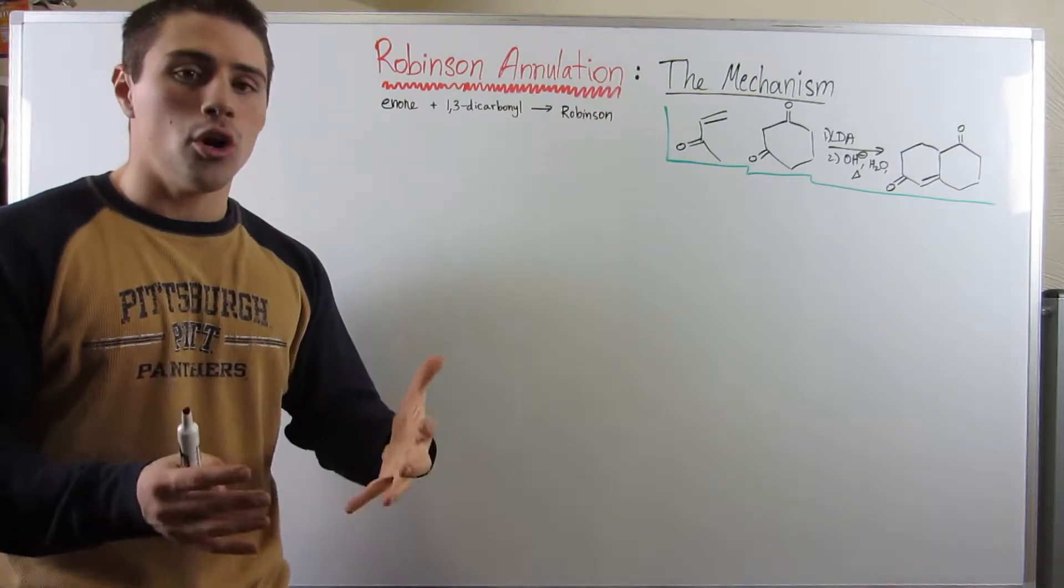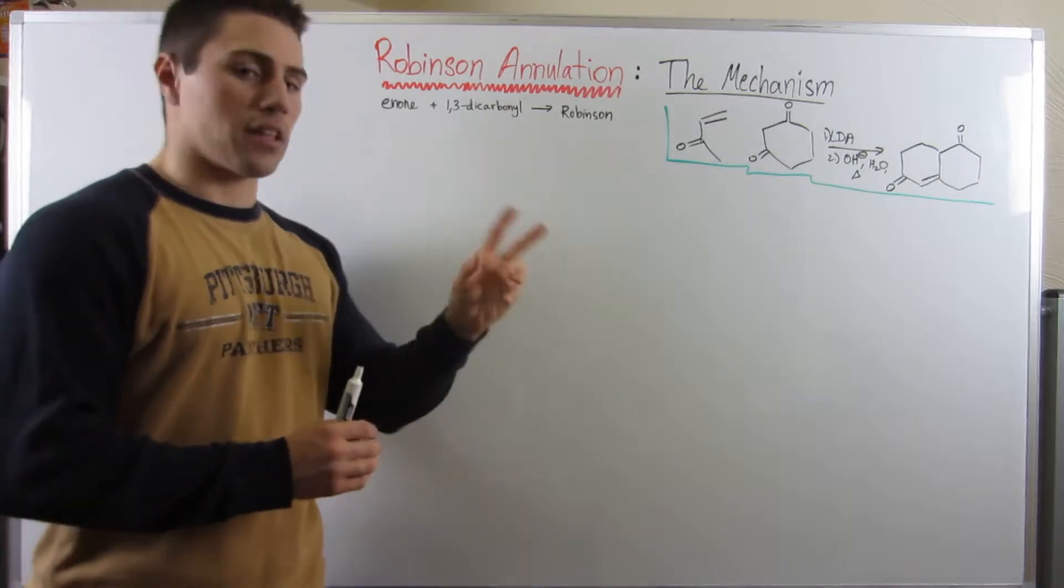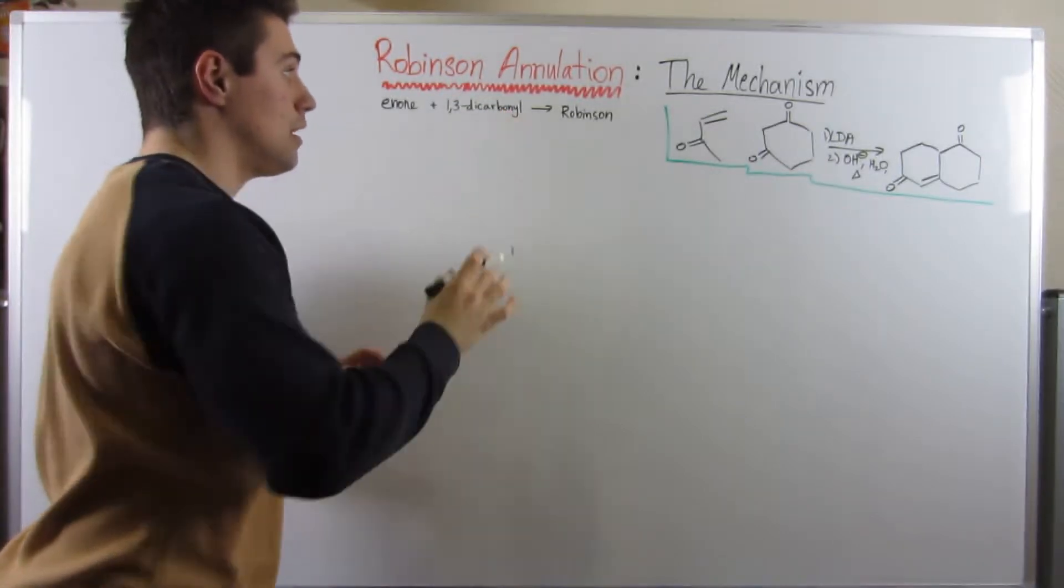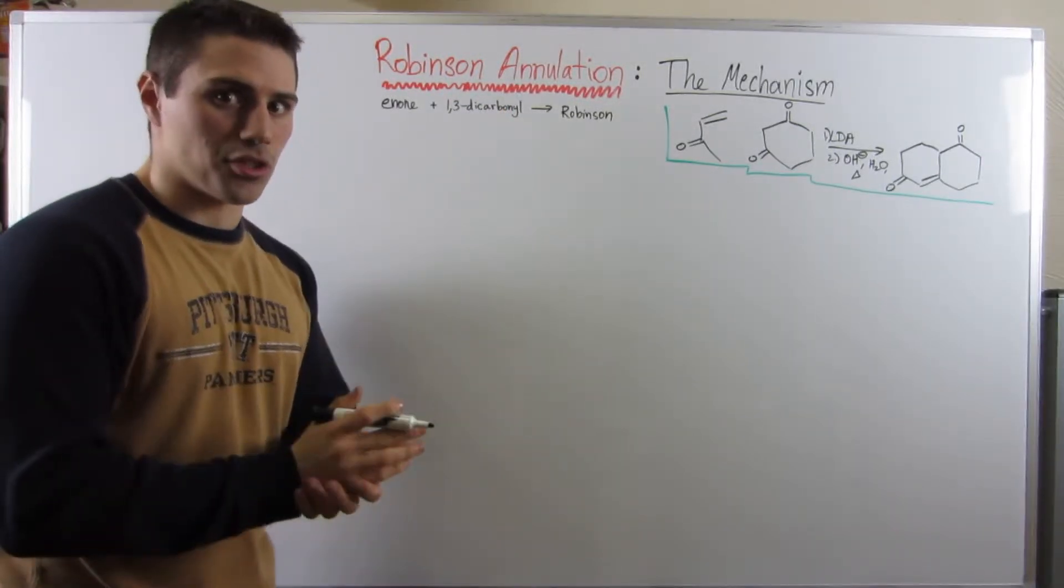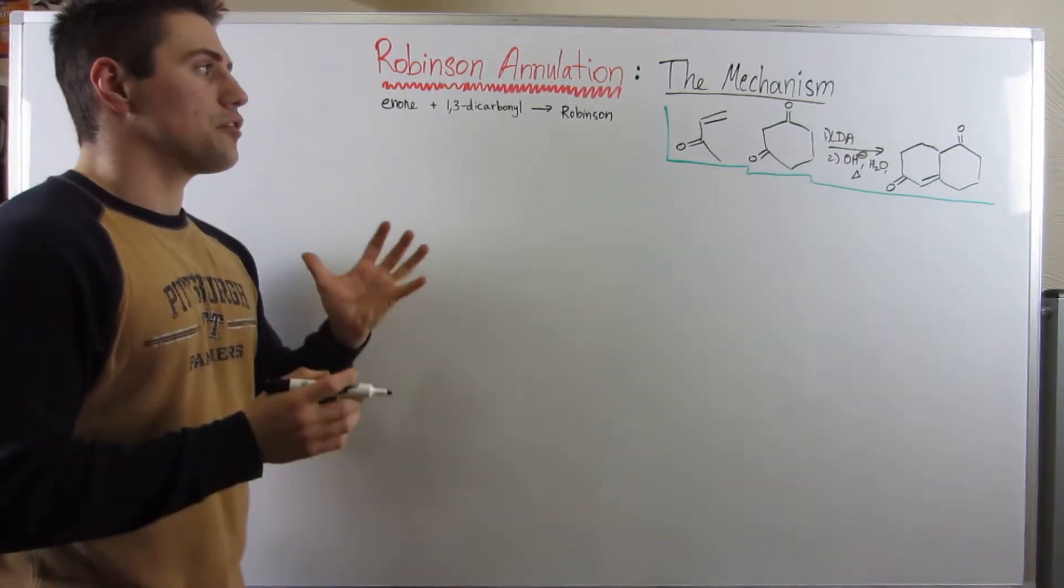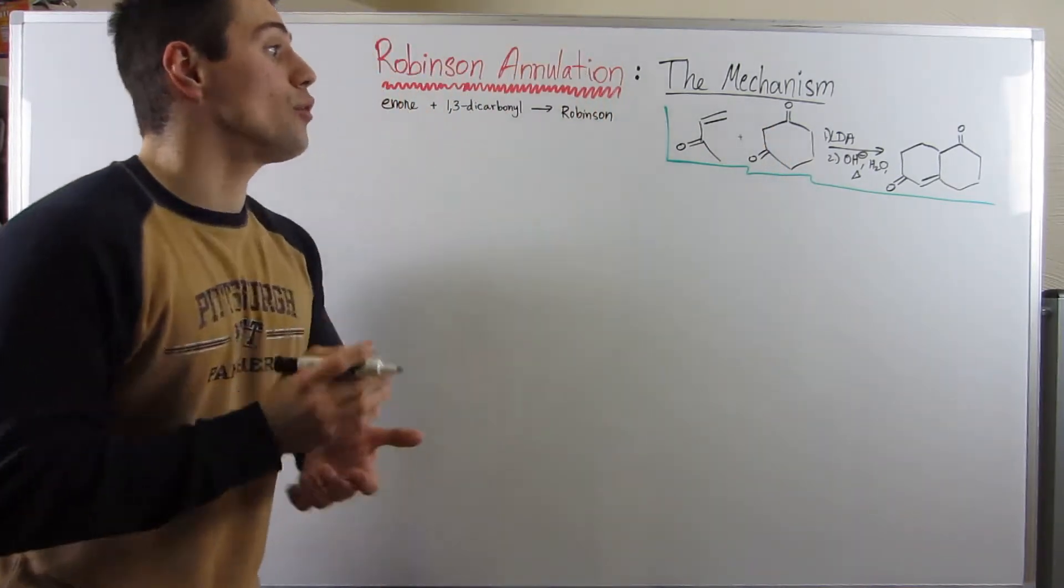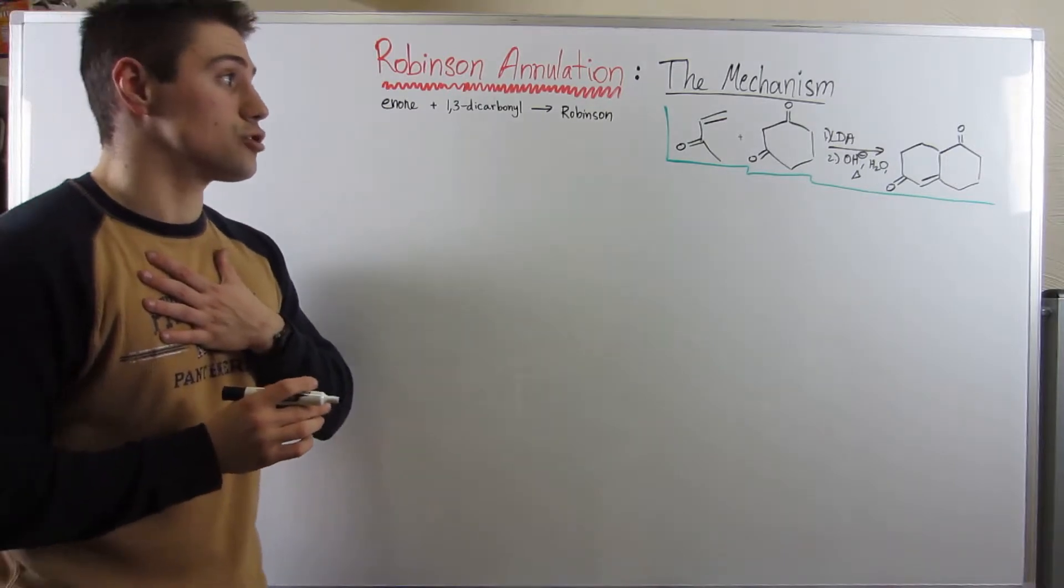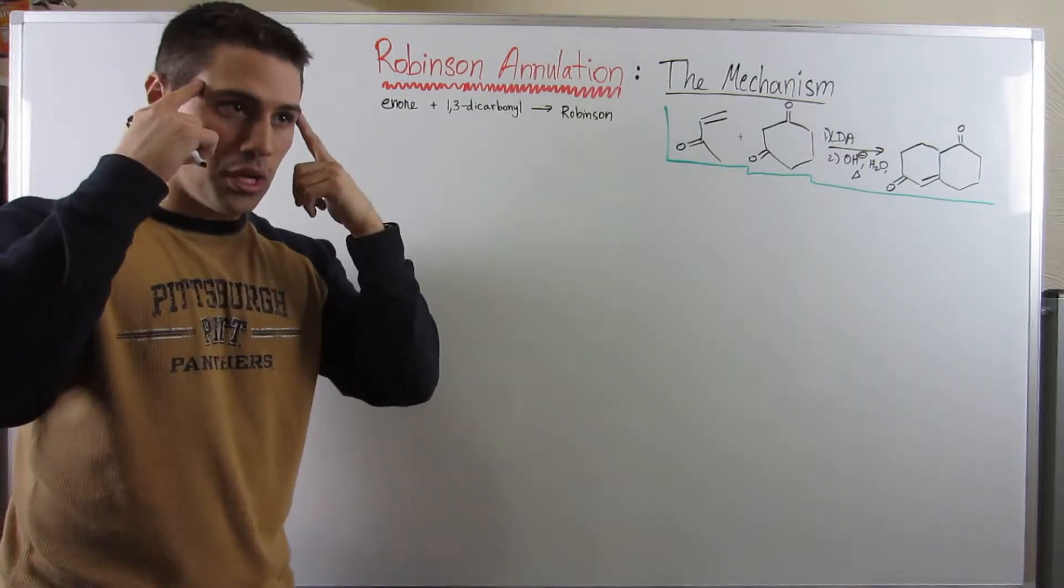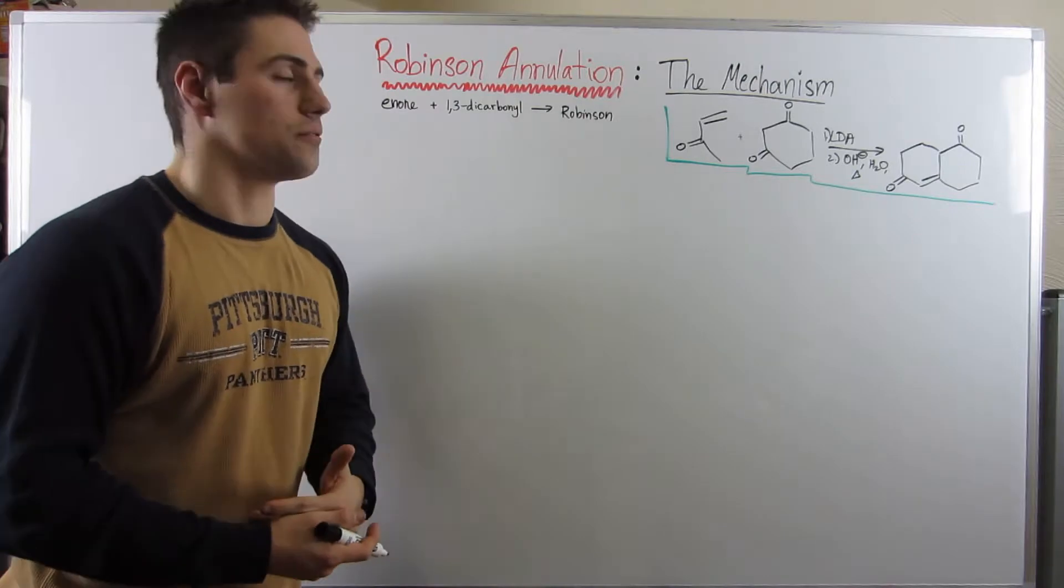Here's the best part: you already know mechanistically the components that make up a Robinson annulation. Here's the verbal formula we're going to use. You need an enone plus a 1,3-dicarbonyl. That's not always the case, but we're going to start with that. I think knowing the mechanism helps you complete the product or use it in a synthesis, so knowing the mechanism is kind of important.